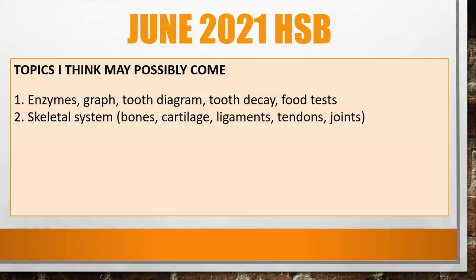Secondly, I'm thinking the skeletal system — this has been quite a popular question over the years, and it didn't come in the January paper or in July last year, so there's a possibility it can come this June. Dealing with bones, cartilage, ligaments, tendons, and joints. I think they may focus more on bones and associated tissues like cartilage and ligaments, possibly excluding the antagonistic muscles — biceps and triceps.